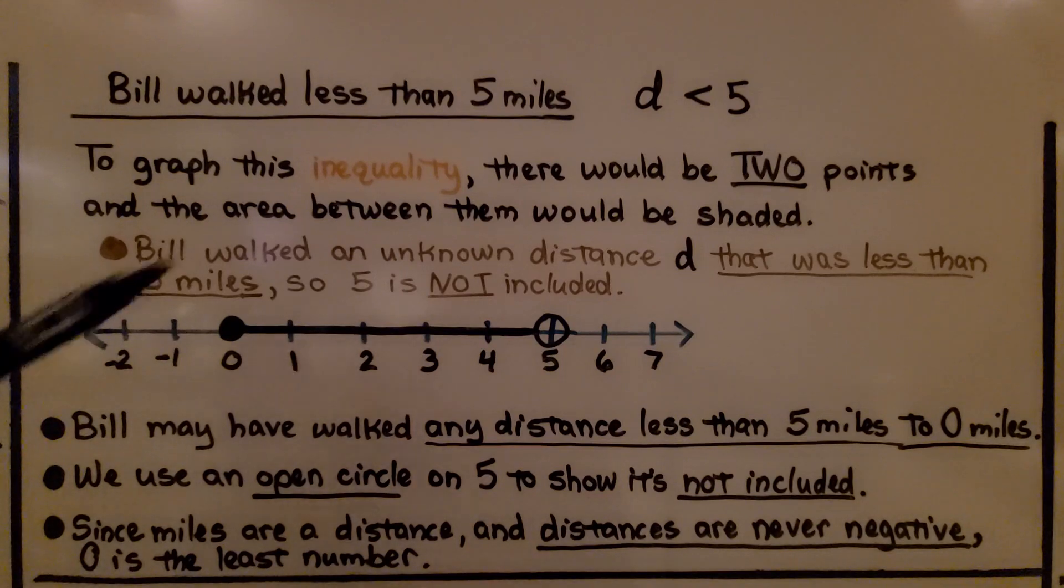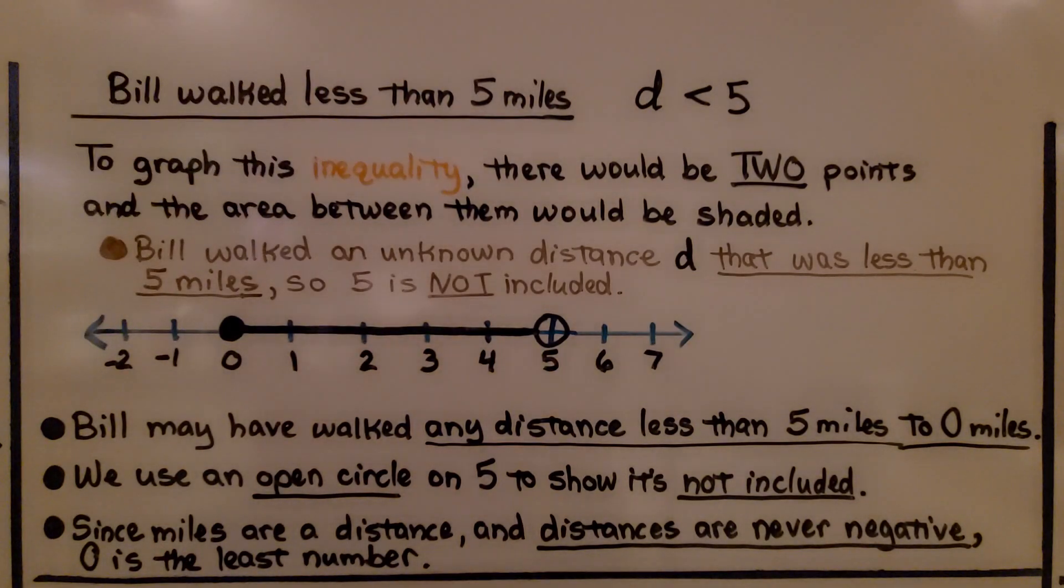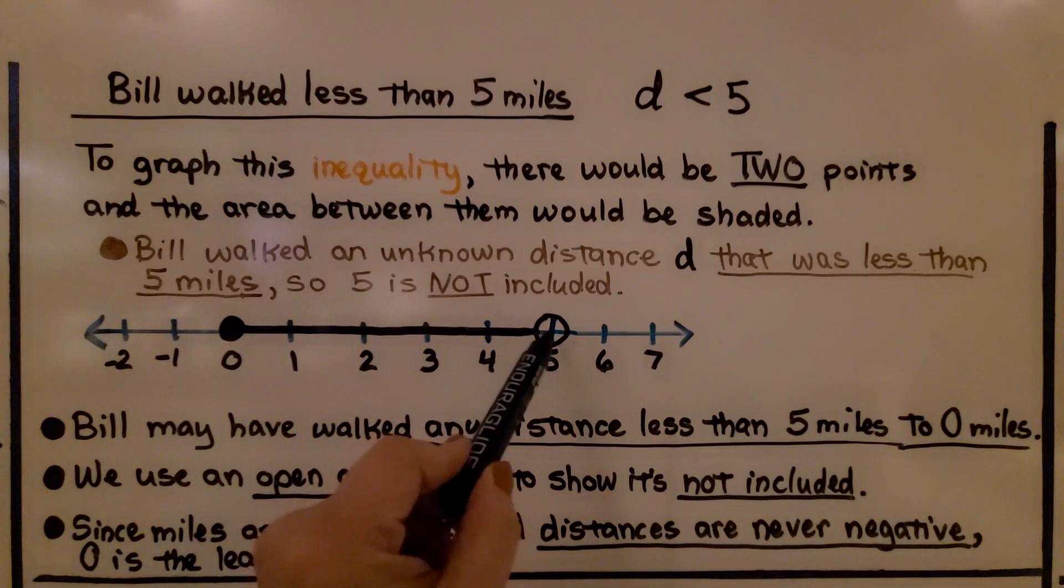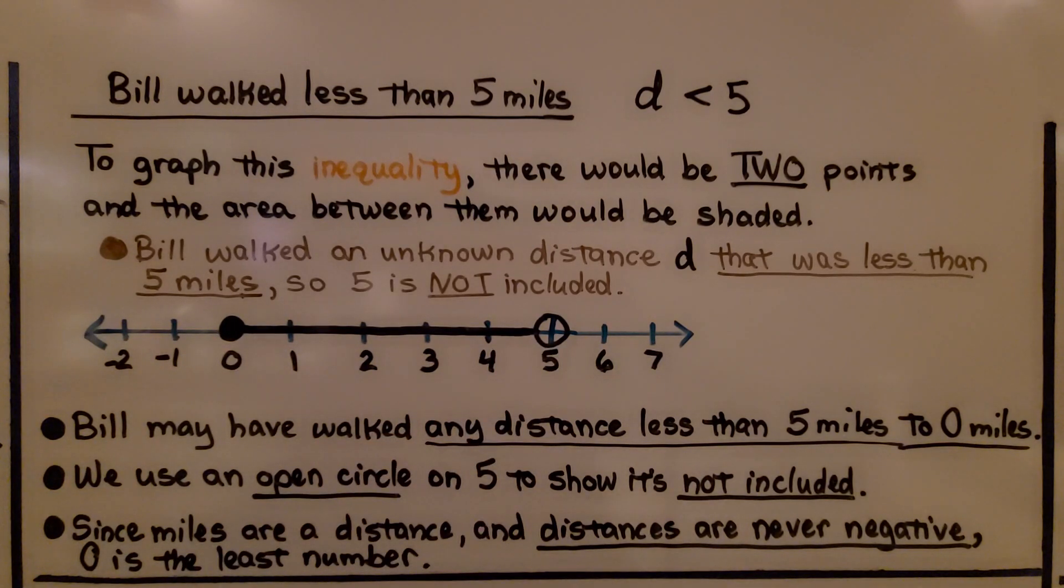Bill walked an unknown distance, d, that was less than five miles, so five is not included. It was less than five. Bill may have walked any distance less than five miles to zero miles.